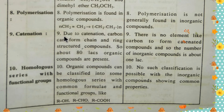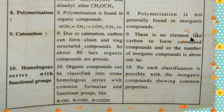The ninth point is catenation. Due to catenation, carbon can form chain and ring-structured compounds, so about 80 lakh organic compounds are present. On the other hand, in inorganic compounds there is no element like carbon to form catenated compounds, and so the number of inorganic compounds is about 1 lakh — compared to 80 lakh for organic compounds.